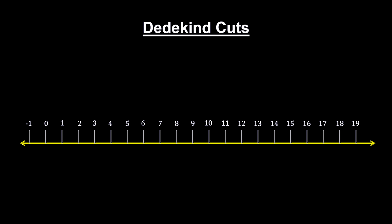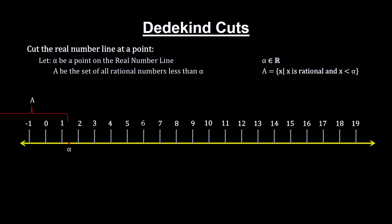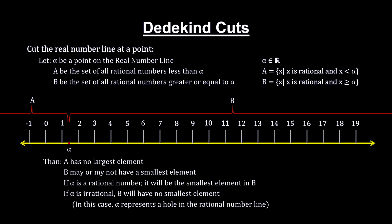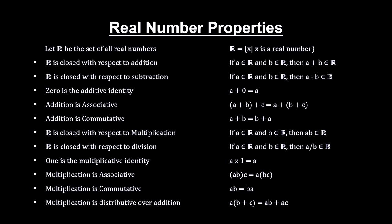In 1872, Richard Dedekind defined cuts in the rational number line that expose the holes created by irrational numbers. He then proved that the set of these cuts is equivalent to the set of real numbers. This extended the rational number line into the real number line in a manner that preserved all the properties of the rational number line.